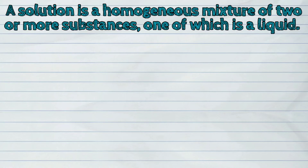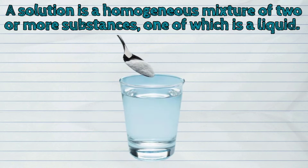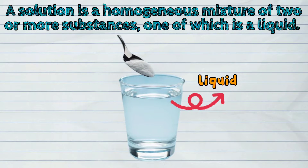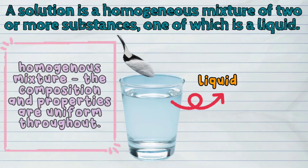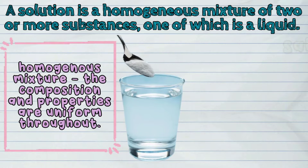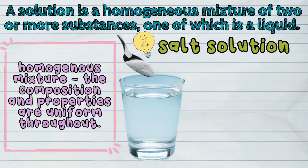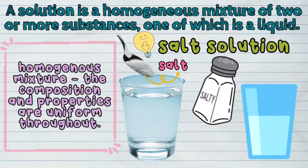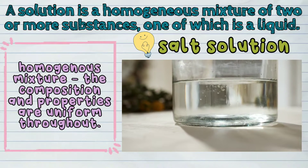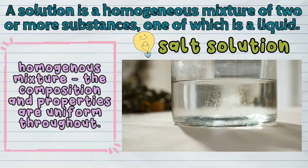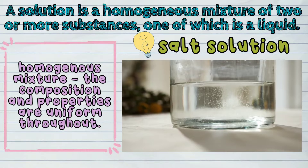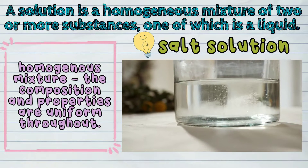A solution is a homogeneous mixture of two or more substances, one of which is a liquid. When we say homogeneous mixture, we mean that the composition and properties are uniform throughout. One example is salt solution, which is prepared by adding salt to water. Upon mixing, the particles of salt eventually dissolve in water. This means that the salt is no longer visible but is still in the water.